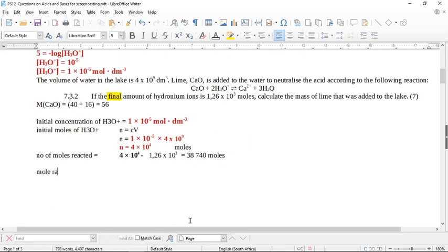Now we need to look at the mole ratio. If we look at the mole ratio here, it's two hydronium ions to one lime. Two of these is to one calcium oxide. So if we've got this many of hydronium ions that reacted, it will be 38,740 divided by 2. So calculator, 19,370. So it was 19,370 moles of calcium oxide was added.